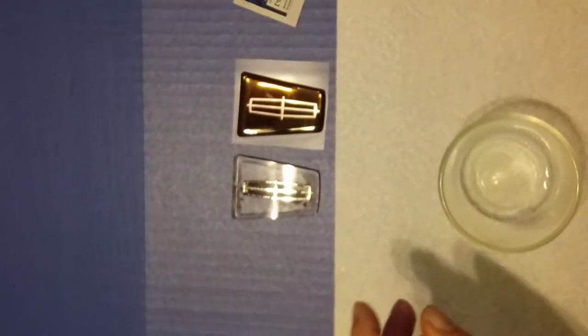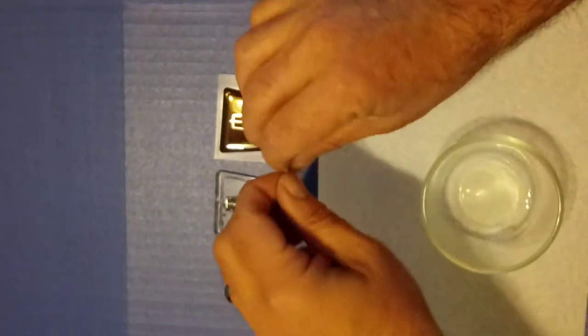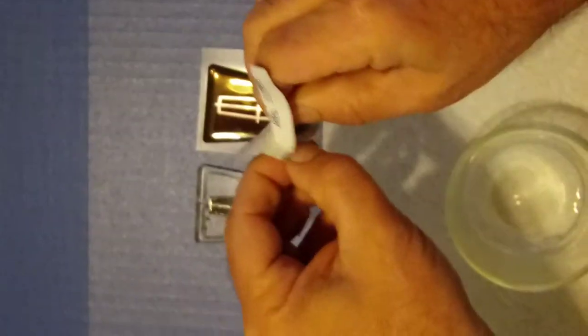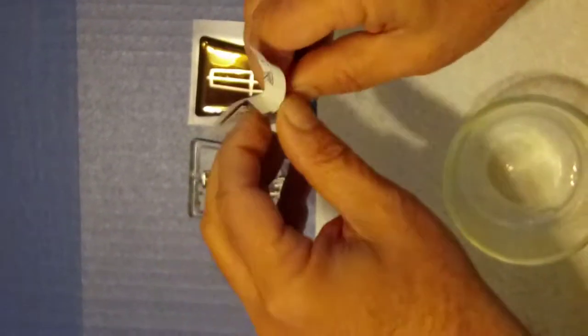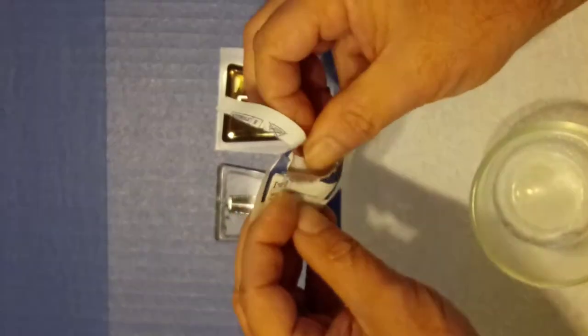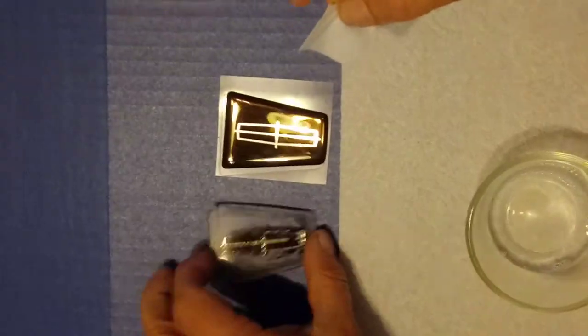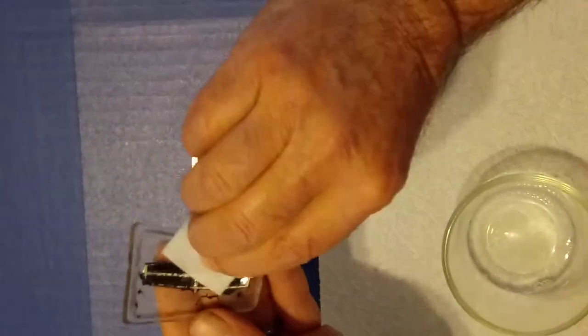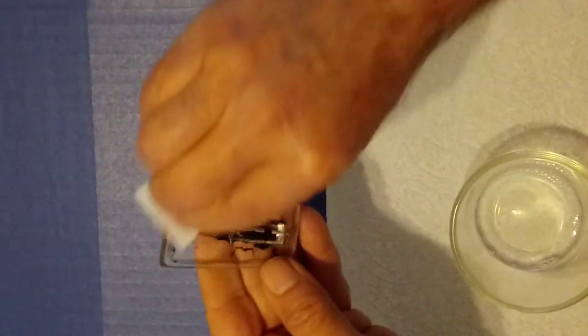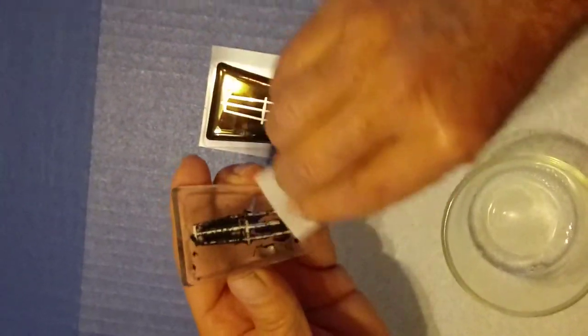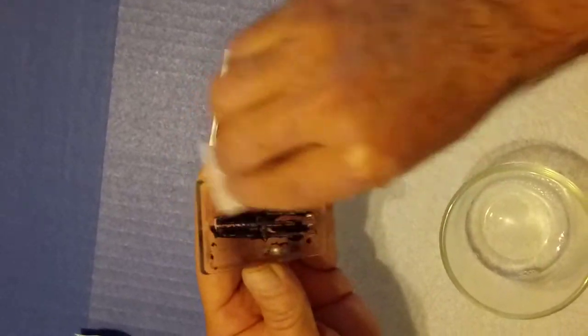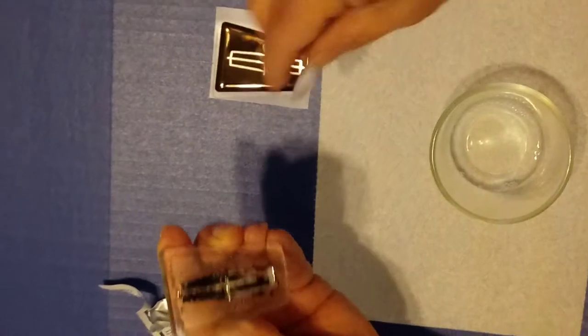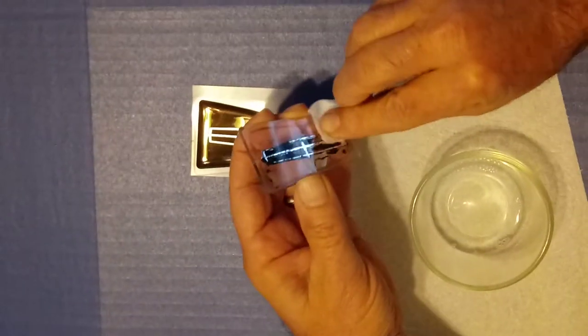But before you put this on top of that, you need to clean the surface. Just imagine this is the trunk lid emblem on your car. You don't have to remove anything. Take an alcohol wipe, clean it. Clean it really well. That removes any grime, dirt, what have you. You clean it with an alcohol wipe and then dry it.